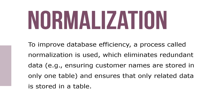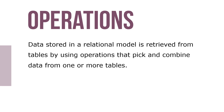To improve database efficiency, a process called normalization is used, which eliminates redundant data — like ensuring customer names are stored in only one table — and ensures that only related data is stored in a table. Data stored in a relational model is retrieved from tables by using operations that pick and combine data from more than one table.